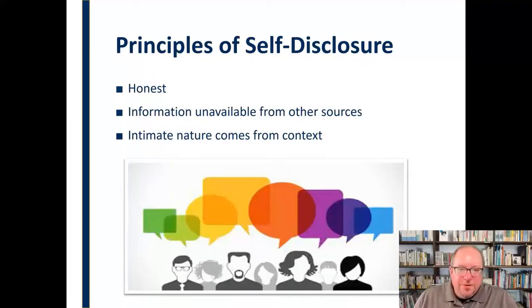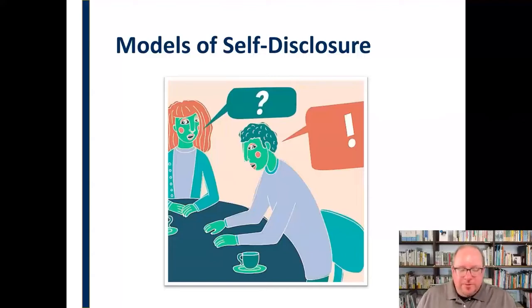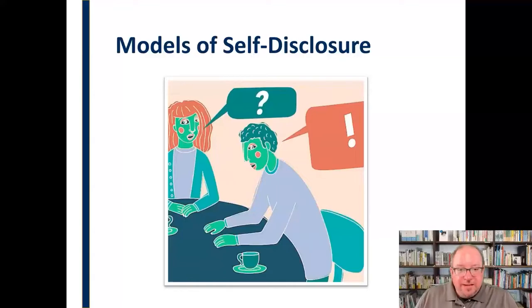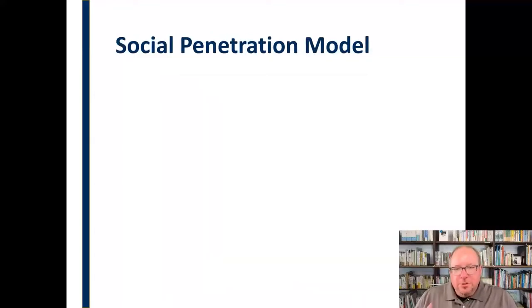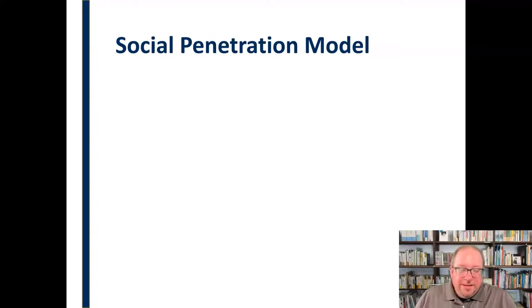There are a couple of ways we look at self-disclosure — a couple of models. Neither one really has to do with the health of a relationship or whether it's a positive or negative factor. These are just ways to observe and conceptualize self-disclosure. The first is called the social penetration model. There's a pretty good chance you're already familiar with it — it's explained fairly well in a popular movie, though it's a little older.